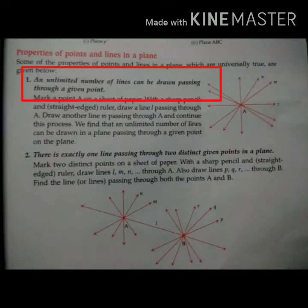Now properties of point and lines in a plane. An unlimited number of lines can be drawn passing through a given point. It means from any given point we can draw unlimited number of lines.